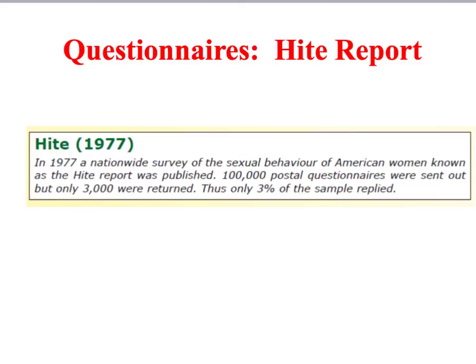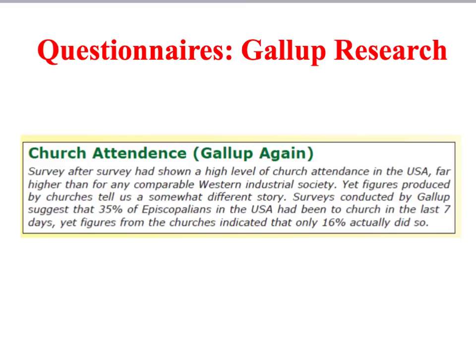This low response rate obviously undermined the representativeness of the survey and the ability to generalise. Another problem with questionnaires arises when respondents give socially desirable answers rather than true and accurate ones, affecting the validity of questionnaire data. For example, questionnaires have consistently shown a high level of church attendance in America according to the Gallup Opinion Poll Company. However, when you look at actual church attendance numbers, it tends to be much lower than the questionnaires suggest, strongly indicating that people say they attend regularly because they think that's the socially desirable answer to give.